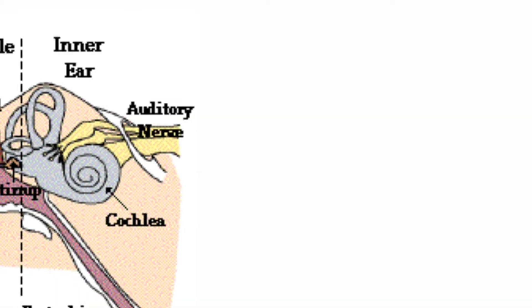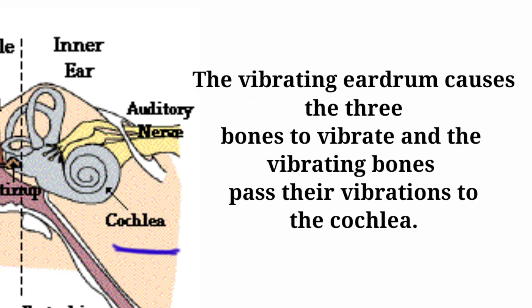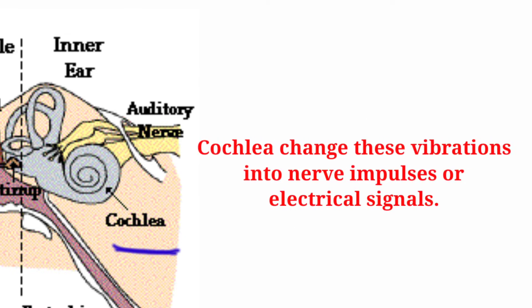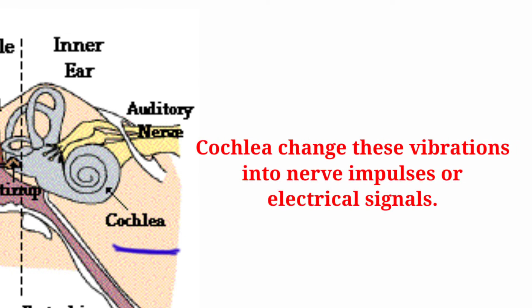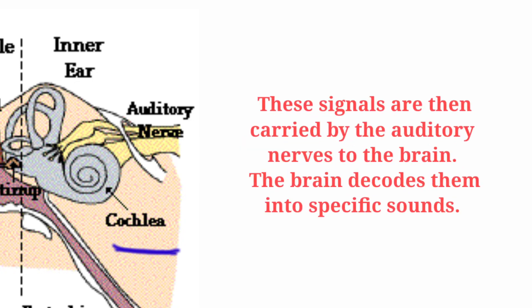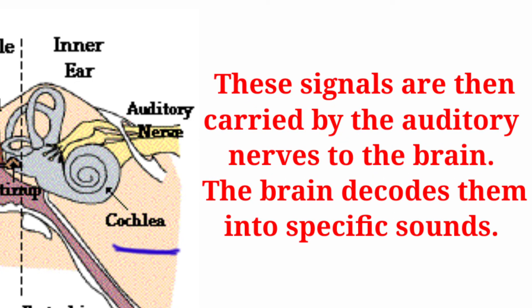The middle ear transmits the amplified sound waves into the inner ear. The internal ear contains the cochlea, which is filled with fluid and has many hair cells inside it. The vibrating bones pass their vibrations to the cochlea, and the sensitive hair cells respond to the sound vibrations and change them into nerve impulses — that is, electrical signals. These electrical signals are then carried by the auditory nerves to the brain.